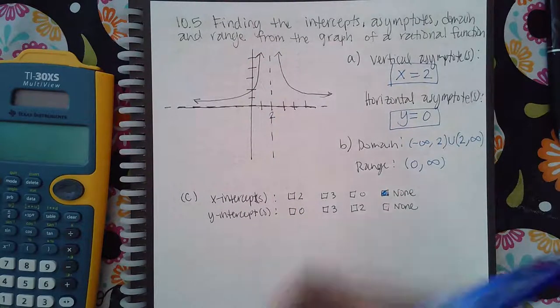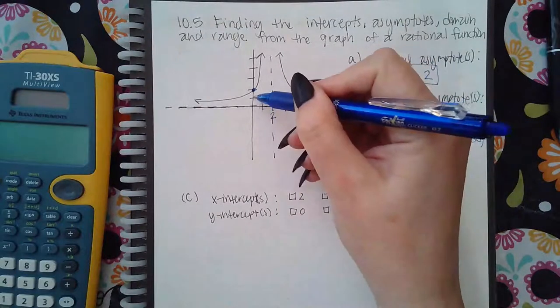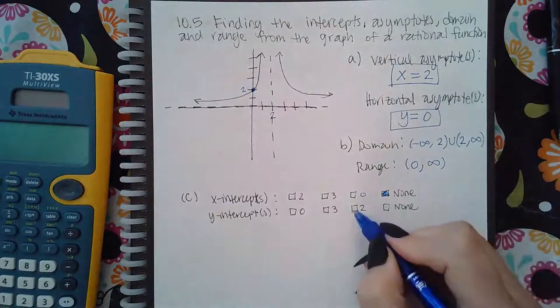And then the y-intercept, actually here, which is the value one, two for y. So I would select this guy here.